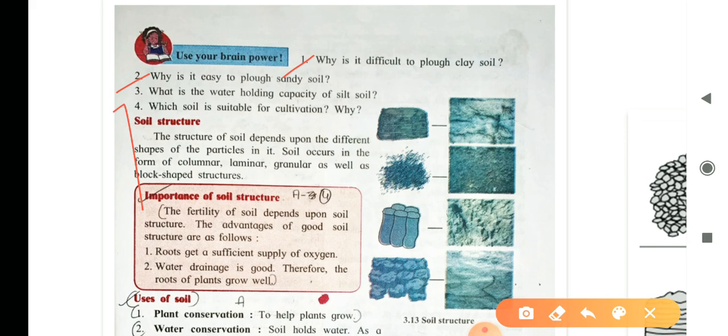Third question, what is the water holding capacity of silt soil? Silt soil has humus, so it holds right amount of water. Question number 4, which soil is suitable for cultivation and why? Silt soil is the best medium for cultivation of crops because it is more ploughable, it has medium-sized particles, more organic matter and it has a proper amount of water retention capacity and therefore, it is suitable for growth.